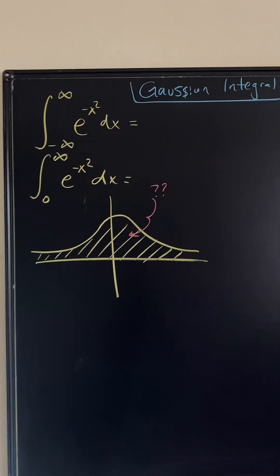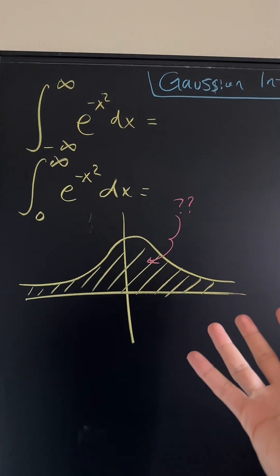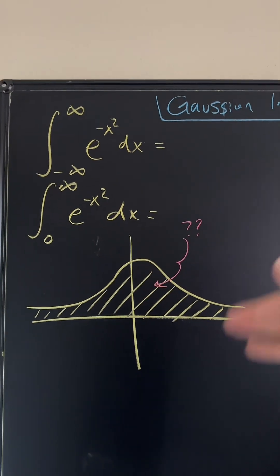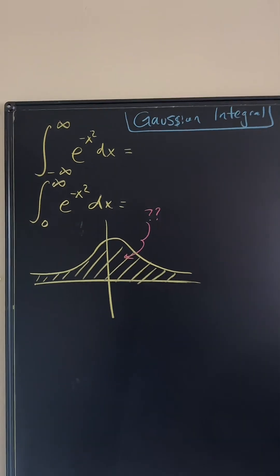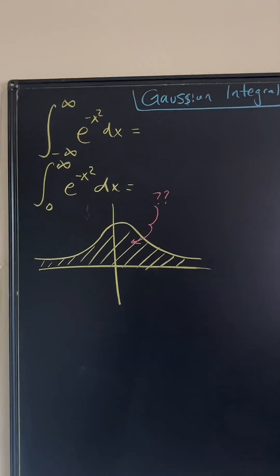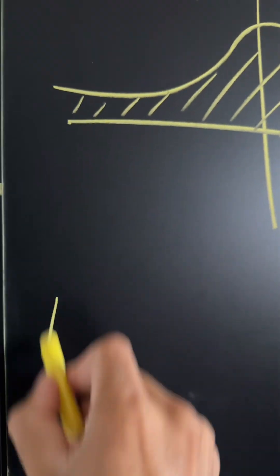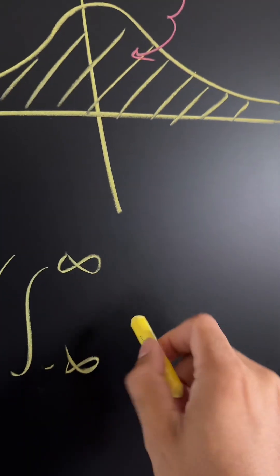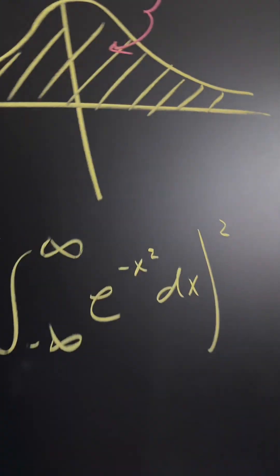Here's sort of how the graph looks. You're trying to find the area underneath the curve from negative infinity to infinity, and the problem with this is that it's not as easy as a u-substitution. So what we have to do is create a double integral. We're going to square this — I'm going to call this integral I. We have the integral from negative infinity to infinity of e to the negative x squared dx, and then we're going to square this.